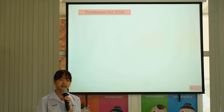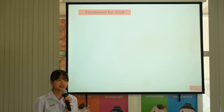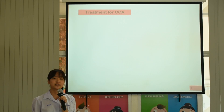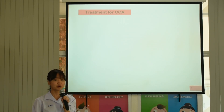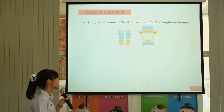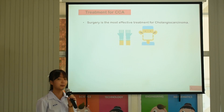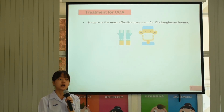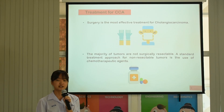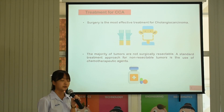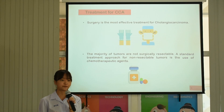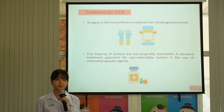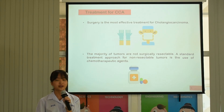As I introduced earlier, CCA is detected at a late stage and responds only poorly to radiation and chemotherapy. So the most effective treatment is surgical resection. But two-thirds of patients have unresectable disease. So to improve quality of life and control the disease, new chemotherapy agents and novel targeted therapy are very necessary.